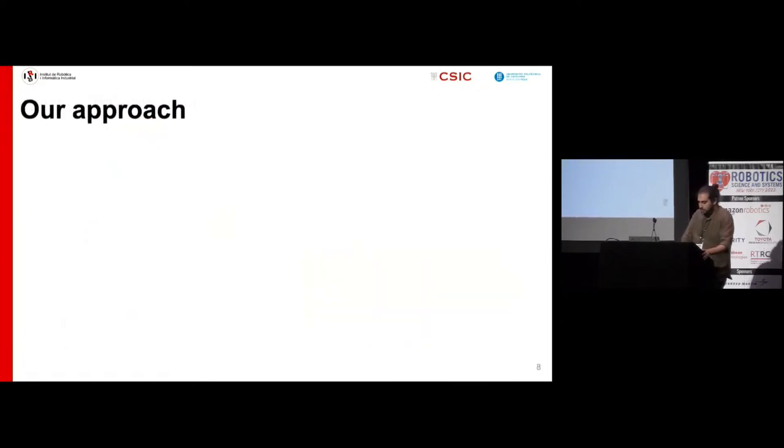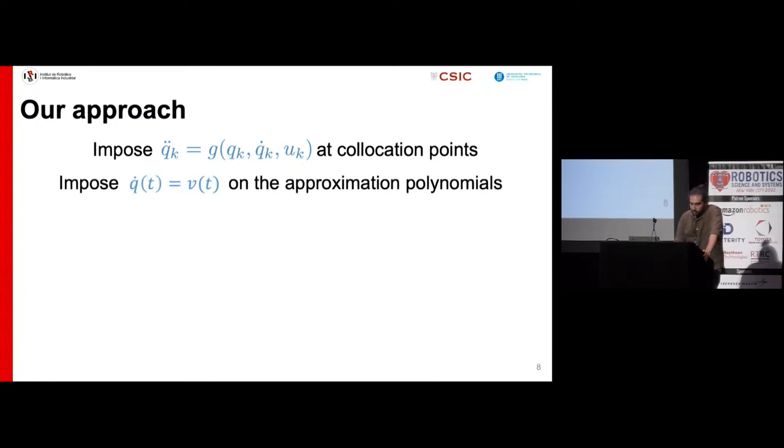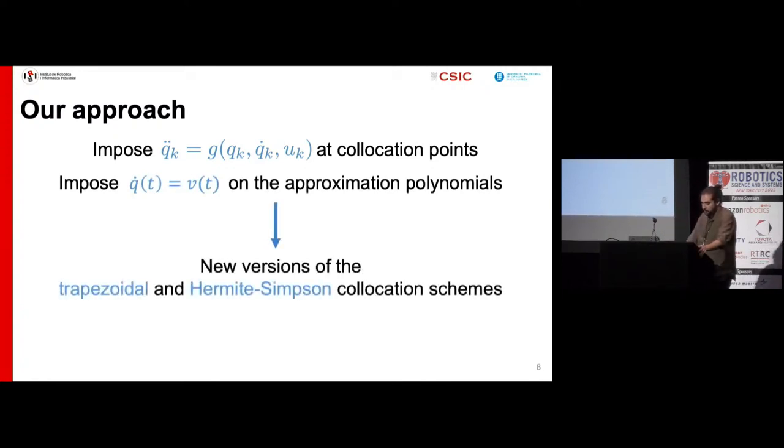To solve these inconsistencies, in our approach, we directly impose the second-order dynamic constraint at the collocation points, and we impose q dot equal to v on the approximation polynomials. As a result, we obtain new versions of the trapezoidal and Hermite-Simpson collocation schemes that remove the inconsistencies and also present continuous accelerations.